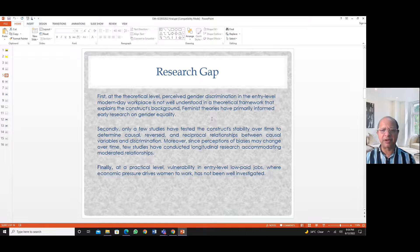The research gap is that only few studies have tested the construct stability over time to determine the causal, reversed, and reciprocal relationships. The perceived gender discrimination may vary over a period of time, so it is important that this construct is tested over a period of time.